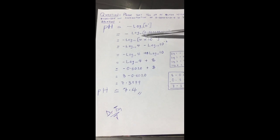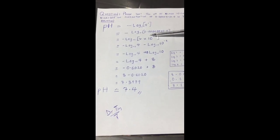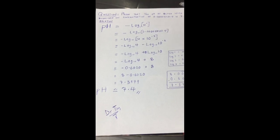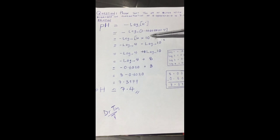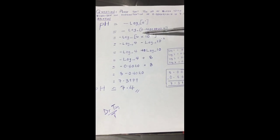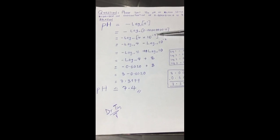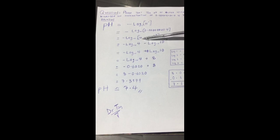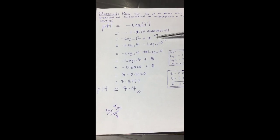The next step is that negative log of this hydrogen ion concentration can be written in standard form. 0.00000004 is written as 4 times 10 to the power minus 8. Since there are 8 zeros, minus 8. So it's now negative log to base 10 of 4 times 10 to the power minus 8.